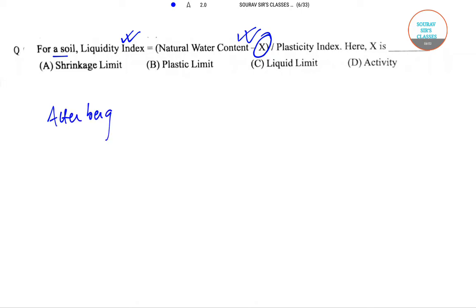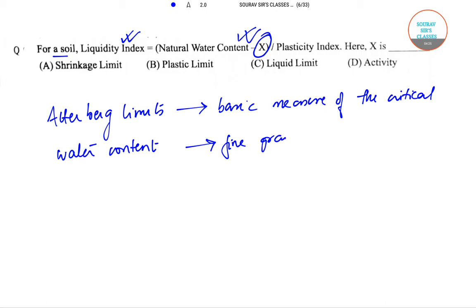Now, Atterberg limit is the basic measure of the critical water content of fine-grained soils. So this is the definition. These are for fine-grained soils.